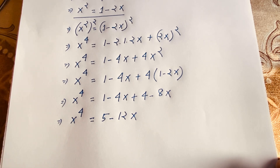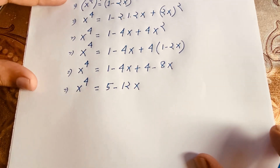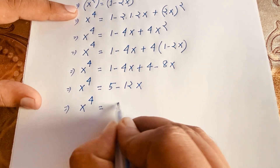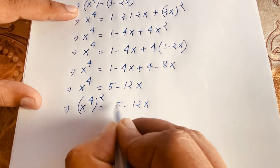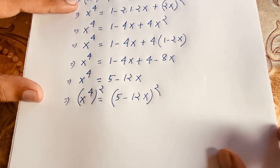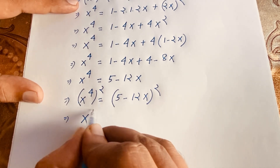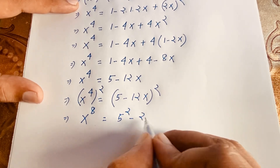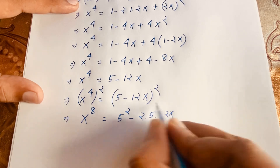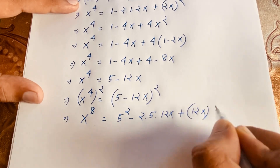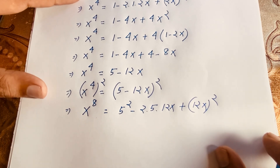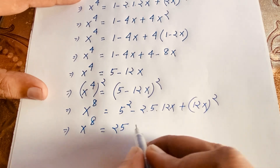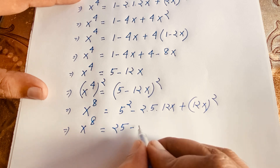Our target is x^10, but we now have x⁴ = 5 - 12x. I use both sides squared again. Squaring x⁴ gives x⁸ = (5 - 12x)² = 25 - 2·5·12x + 144x² = 25 - 120x + 144x².